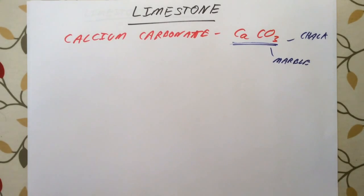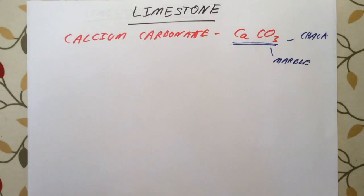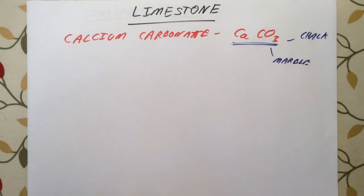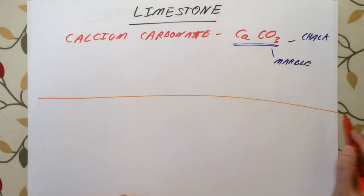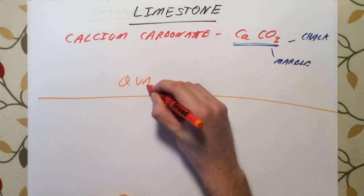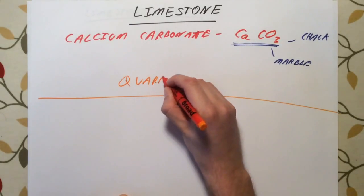How do we get limestone? Well, we actually quarry it — we dig it out of the ground. We have massive pits dug into the countryside and we basically tear up as much of it as we can from the ground. And obviously that is going to have implications; it has positive aspects and it has negative aspects.